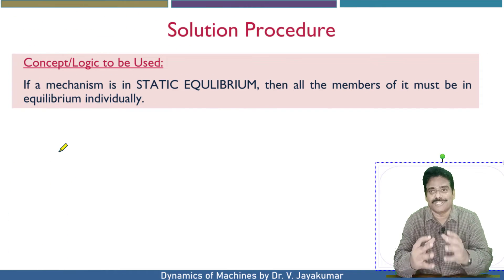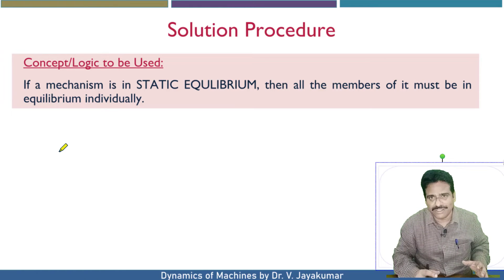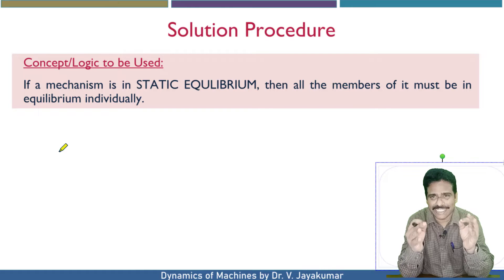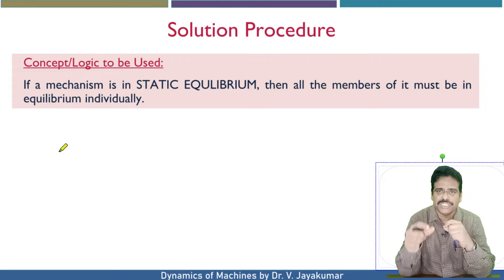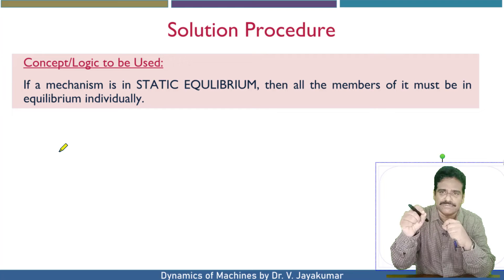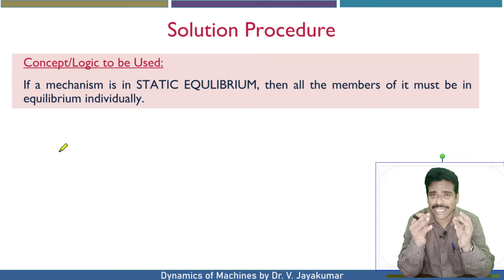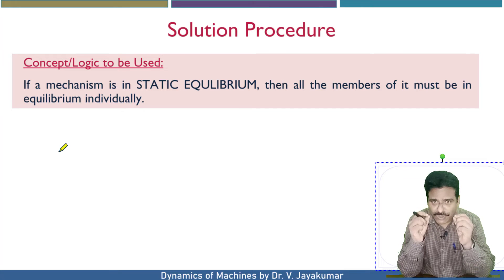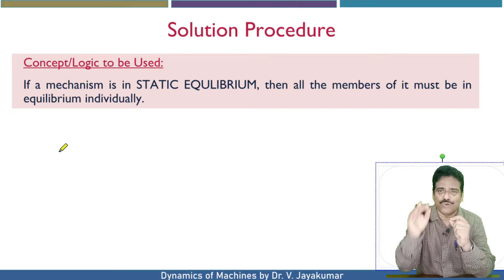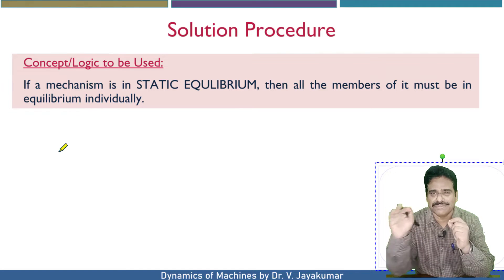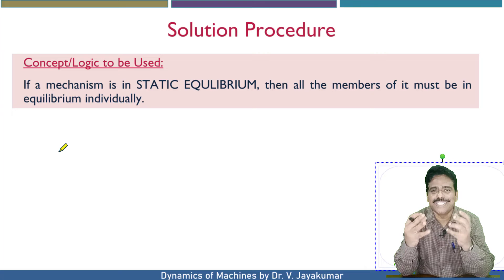What is the logic involved? What is the concept involved? The concept is simple. When a mechanism is in static equilibrium, we can say that each and every link of the mechanism will be in equilibrium. When I say slider crank mechanism is in static equilibrium, it is very important that all four links of the slider crank mechanism also should be in equilibrium.